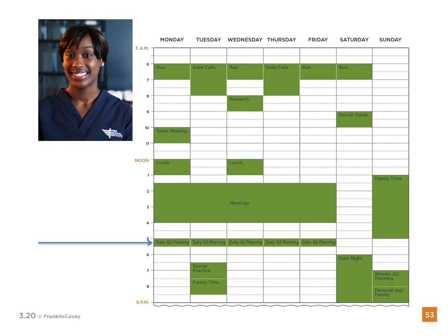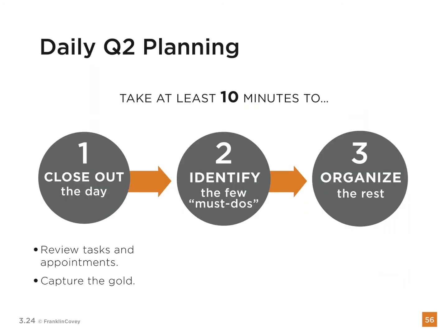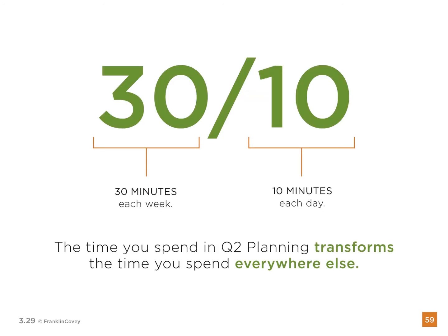You'll notice this little blue arrow pointing to daily Q2 planning — a 10-minute chunk being carved out for daily planning. That's important because it's the 10 minutes daily, usually at the end of the day, to close out the day and review the tasks and appointments that came up. If they didn't get done and they were Q2 tasks, make sure that they are scheduled the next day or as soon as possible, and then organize the rest again. A rule of thumb is to take 30 minutes each week to make that schedule and get those big tasks in, and 10 minutes each day to review the day and see if the tasks had been properly paid attention to.